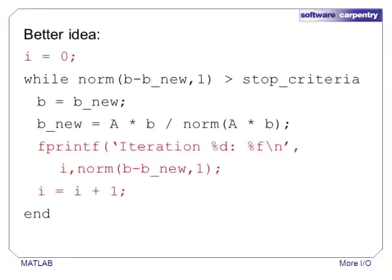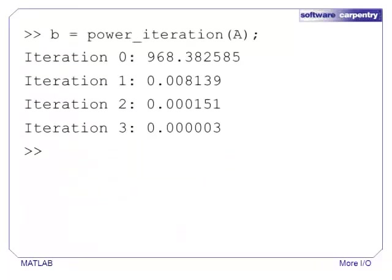A better strategy is to utilize the fprintf function, which prints formatted text to a file or to the standard output stream. Clearly, this output is cleaner and shorter than it would be if we had just left off a semicolon.